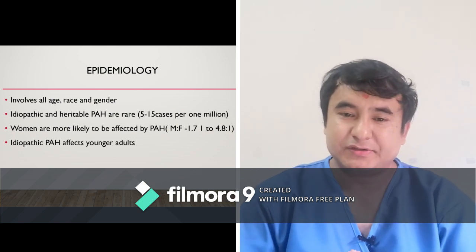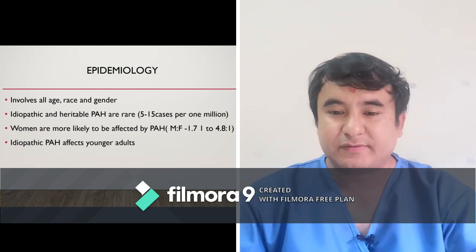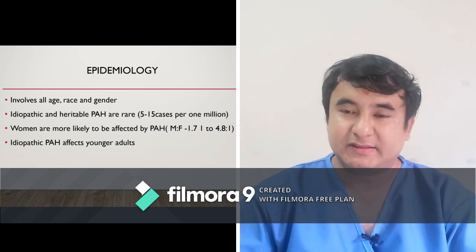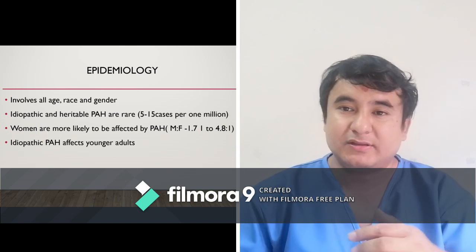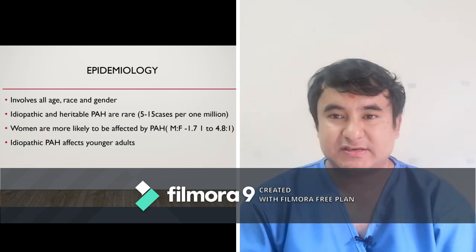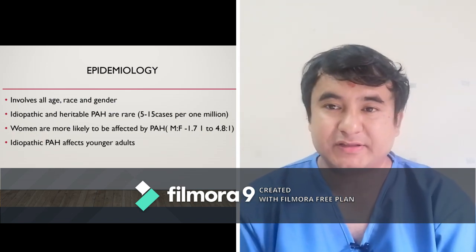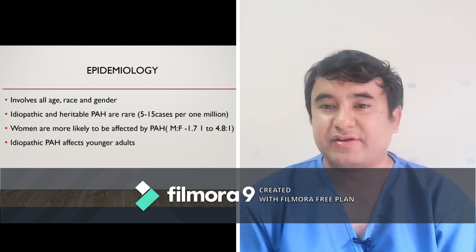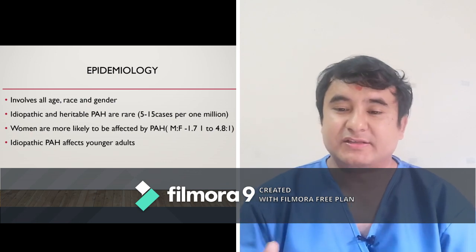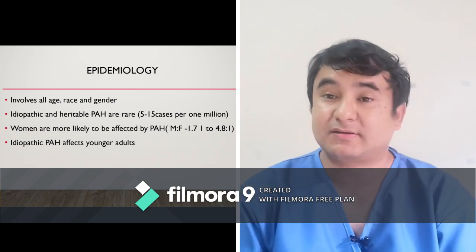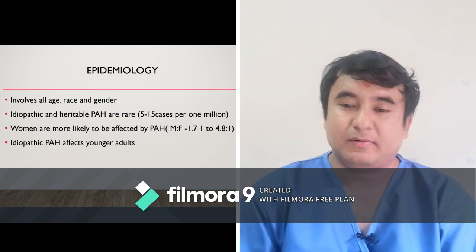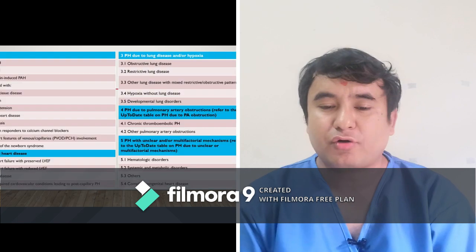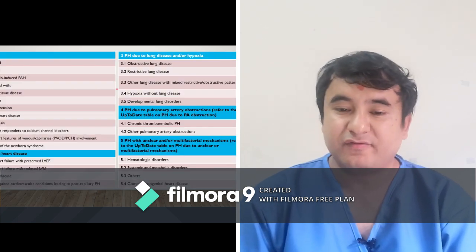Regarding epidemiology, this is basically for category one — pulmonary artery hypertension. In today's presentation, we will focus on pulmonary artery hypertension. It is common in all ages, races, and genders, with no major predilection, and it is quite a rare disease. However, if you look at it gender-wise, it is more common in females.